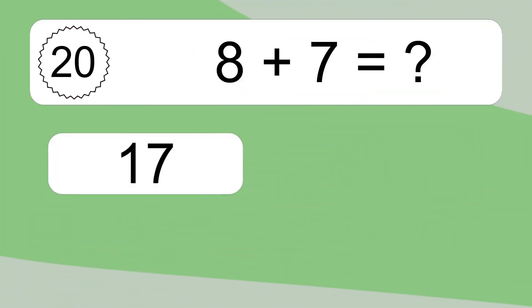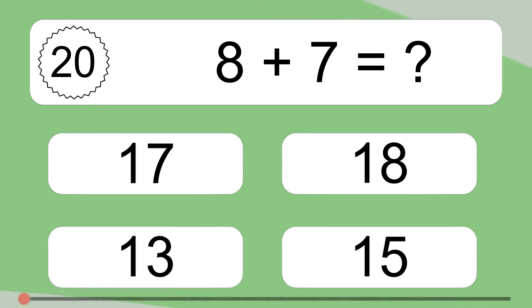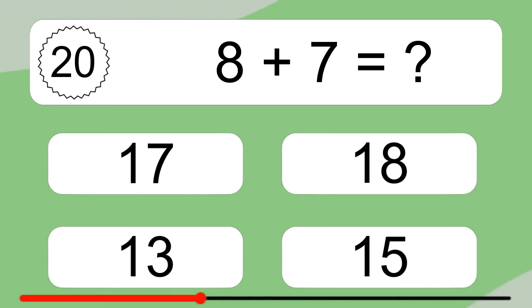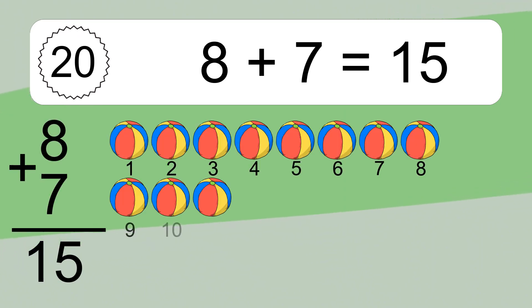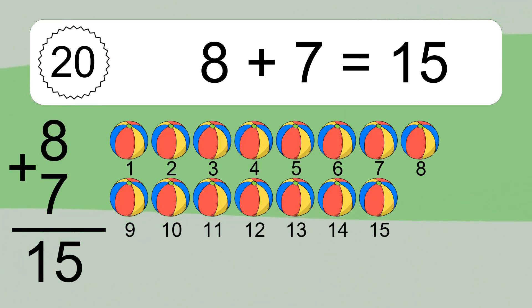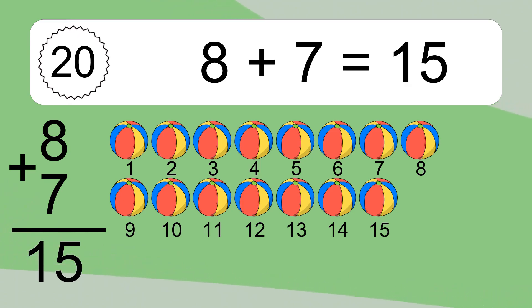8 plus 7 equals what? 8 plus 7 equals 15. Let's count it: 1, 2, 3, 4, 5, 6, 7, 8, 9, 10, 11, 12, 13, 14, 15.